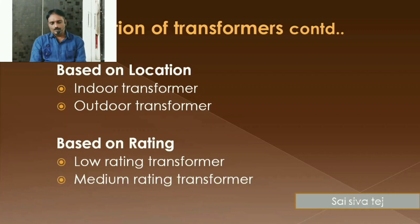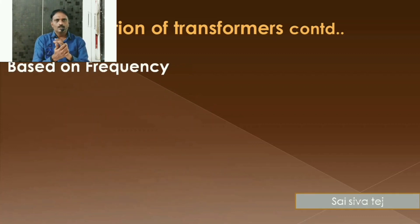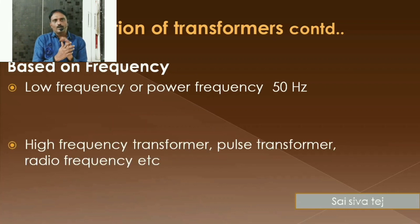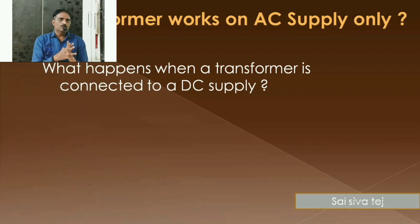That's about the classification of transformers. In addition to this, in today's class I would like to tell you why the transformer should be given only AC supply and why not DC. What will happen if DC supply is given to the transformer? Let me explain what is actually going to happen when DC supply is given to a transformer.